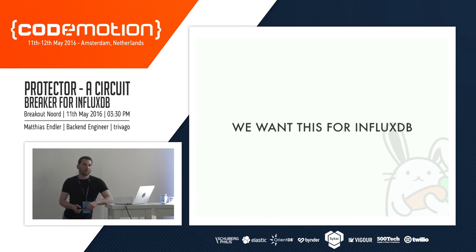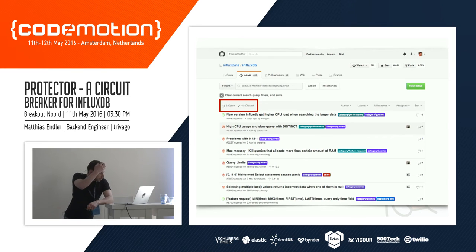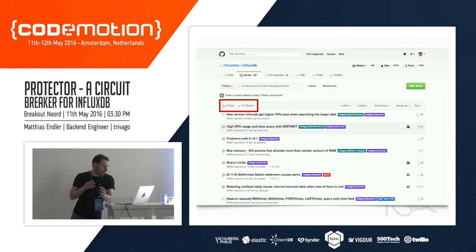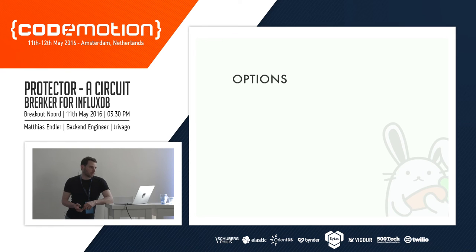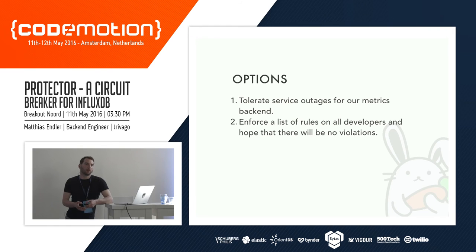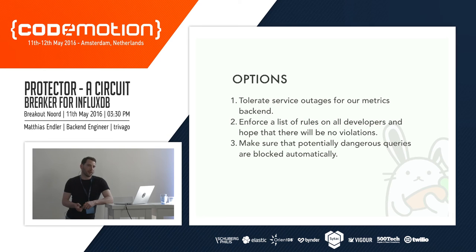We wanted this for InfluxDB. There were at least 43 open tickets on InfluxDB's GitHub regarding the query engine and memory usage — everybody running it was basically saying InfluxDB should fix it in the query engine. We were waiting for that, but it just took too long and it's still not implemented. So for us, the options were: tolerate system outage, enforce a list of rules on all developers and hope nobody breaks them, or make sure potentially dangerous queries are blocked automatically — which means fixing it ourselves.